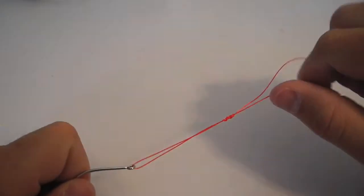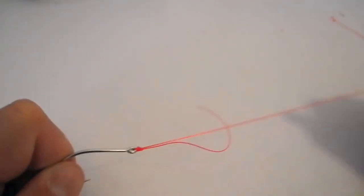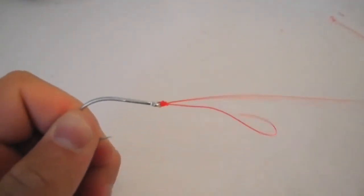Then you have your loop and what you do is grab the standing line, the part going to your reel, and just pull it and it'll slide everything nice and clean down to the eye of the hook.